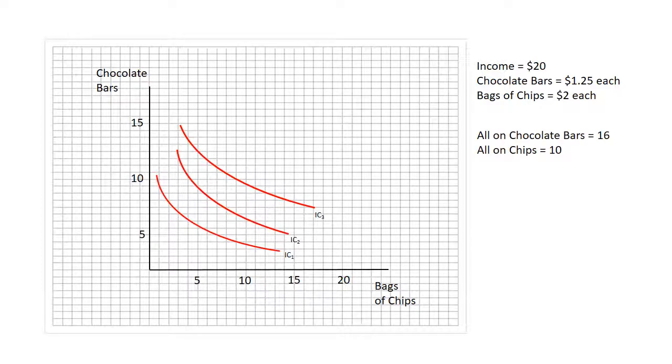The easiest way to do that is just to divide income by the price of each of the goods, and that will tell you where the budget constraint intersects with the vertical and horizontal axis. If you have $20 and chocolate bars are a dollar and a quarter each, you can buy up to 16 chocolate bars with that 20 bucks as long as you don't buy any chips.